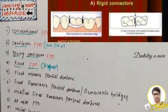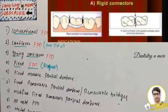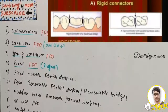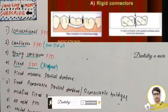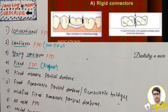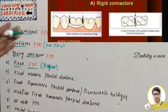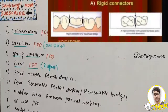The problems with fixed-fixed FPD: since the connectors are rigid, unwanted stress and lever forces are directly transferred to the abutment, producing considerable damage. It also requires excessive tooth preparation to achieve a single path of placement, is difficult to cement on multiple abutments, and is contraindicated for tilted abutments.